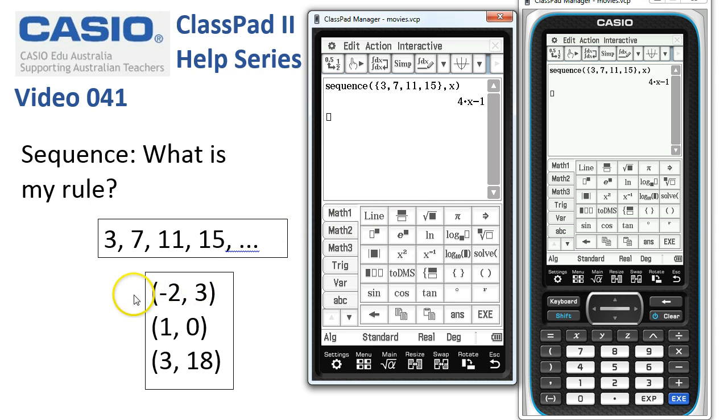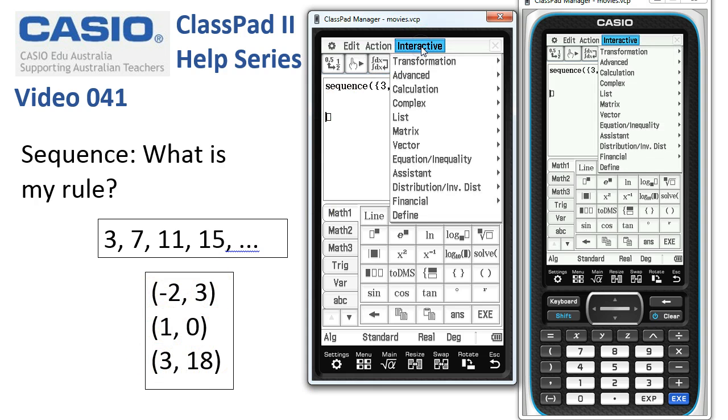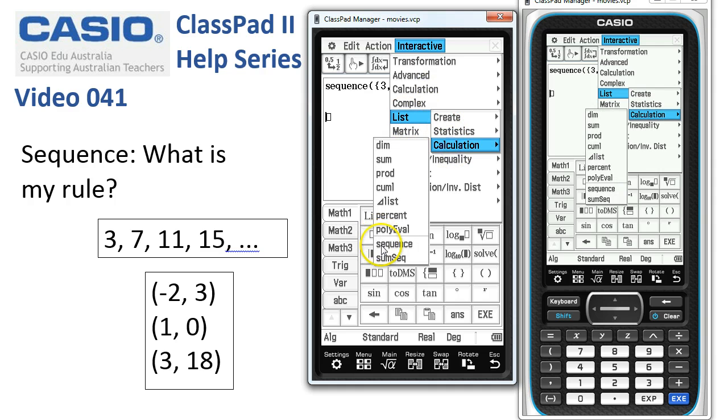Another way is, suppose we want to find the equation of the parabola that passes through these points. We need to set these up in two lists. So we'll go straight into the tool this time. Interactive, List, Calculation, Sequence.